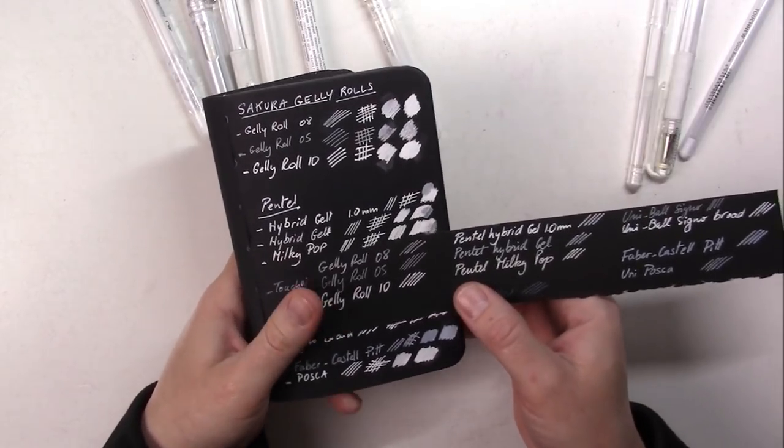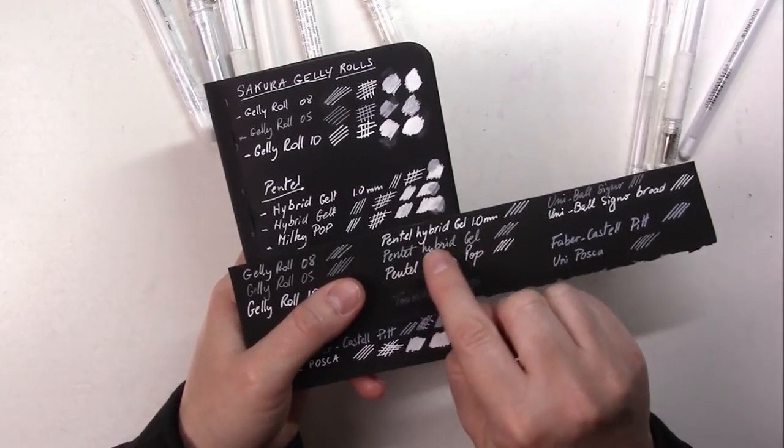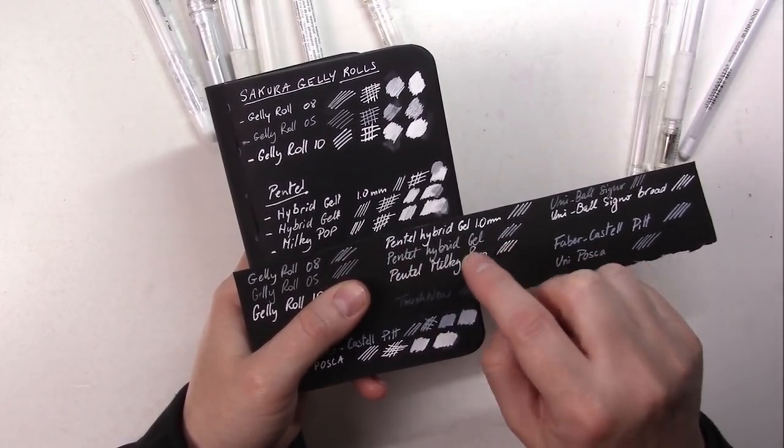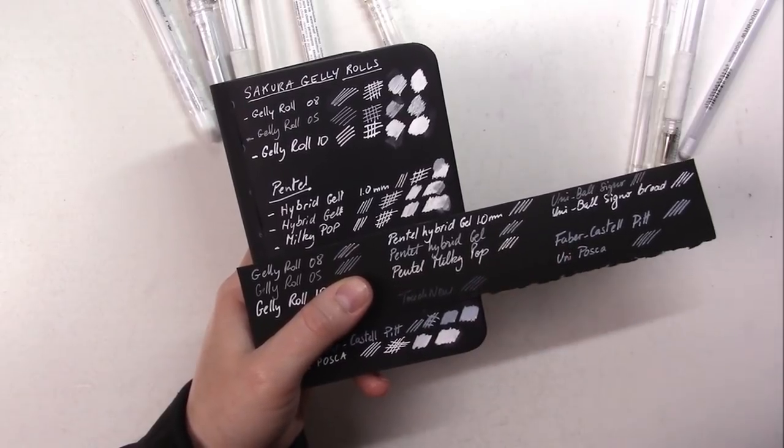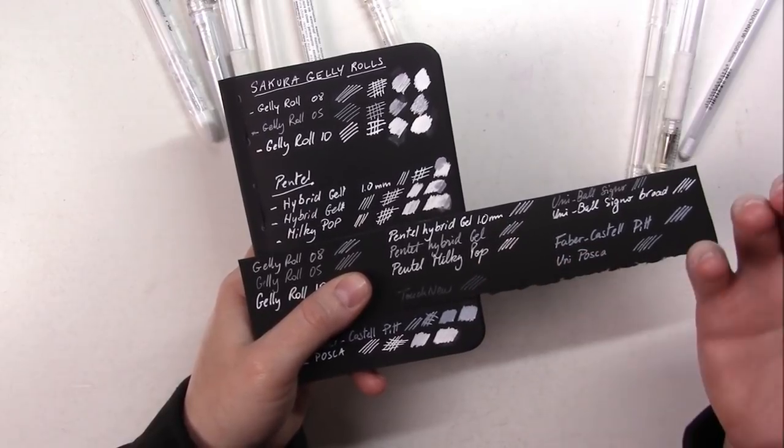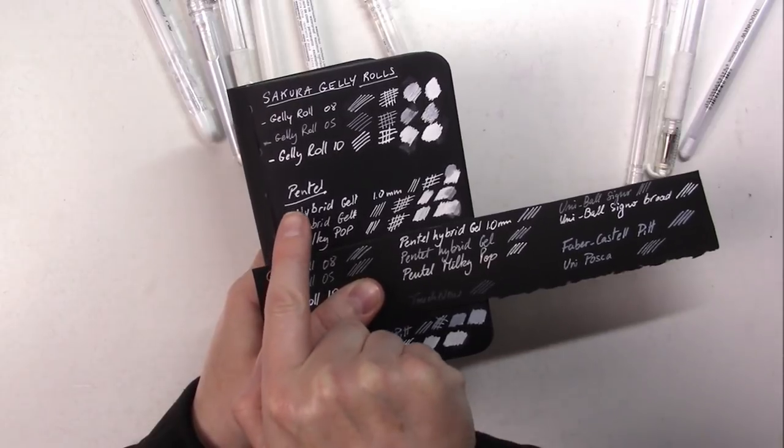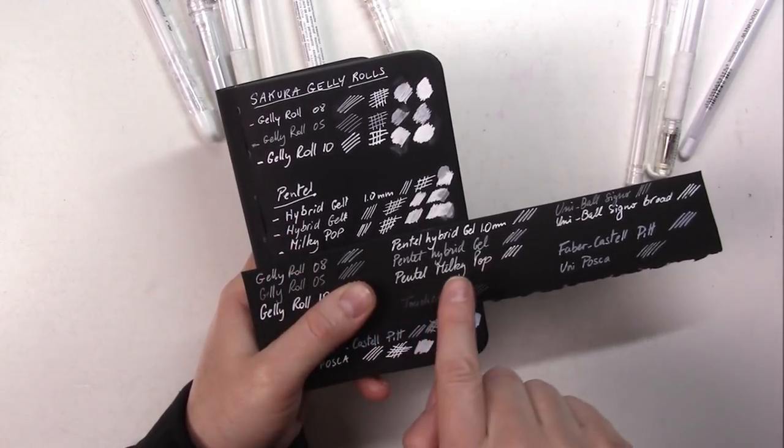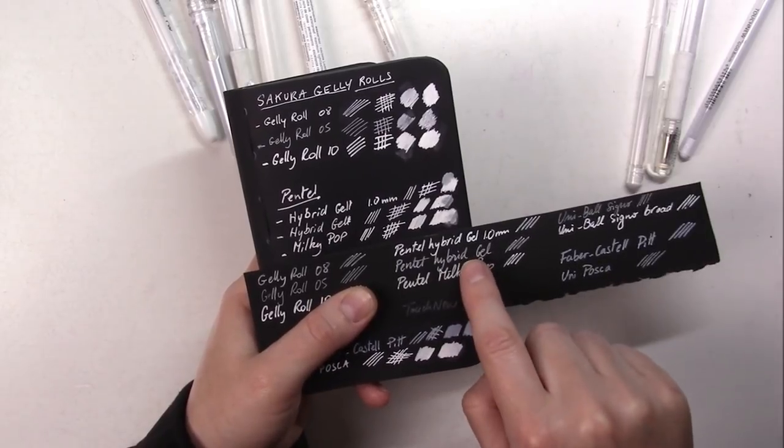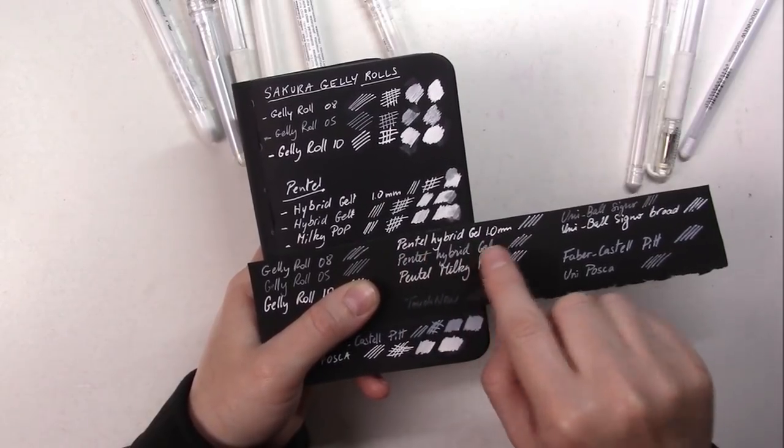For the Pentel, while the ink was still wet, the Hybrid Gel, the smaller one, and the Milky Pop did look exactly the same, but the Milky Pop actually got brighter as it dried for some reason. Still, you can tell that all three of them are brighter on the Nova series paper rather than the black Stonehenge paper. Again, the bigger tip gives the better results.